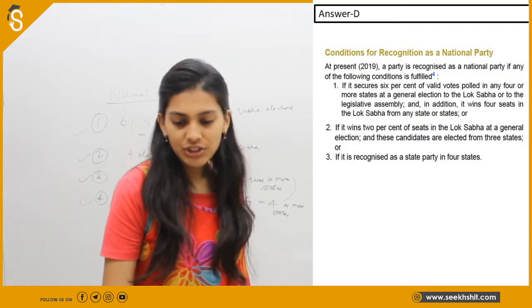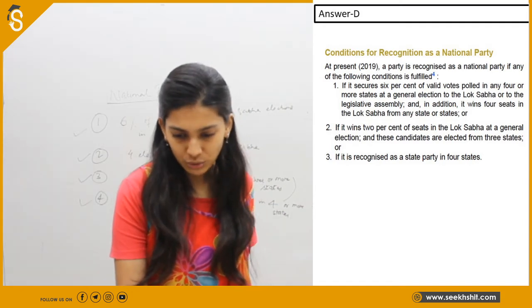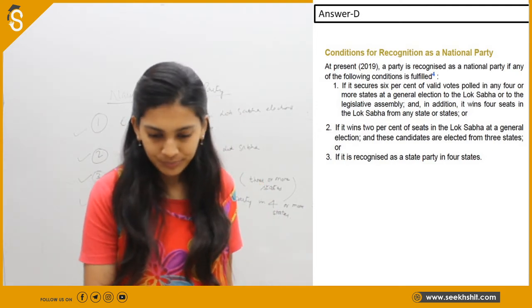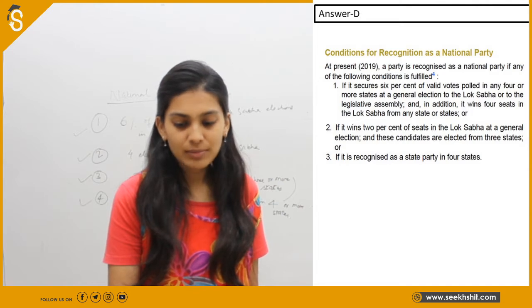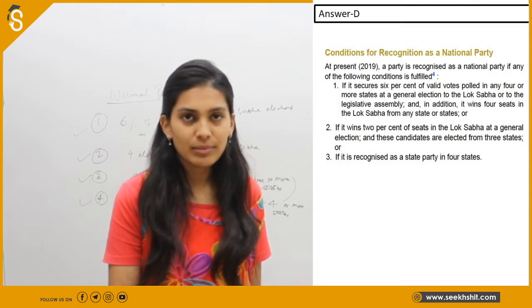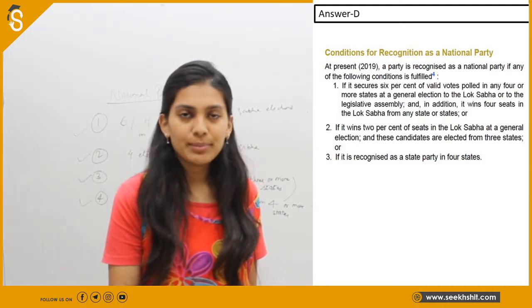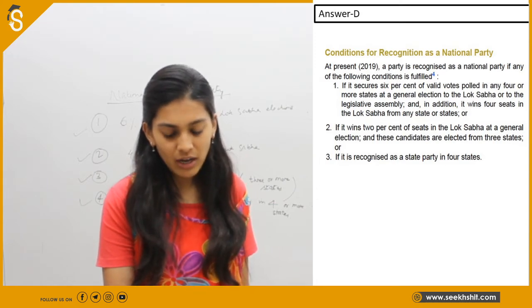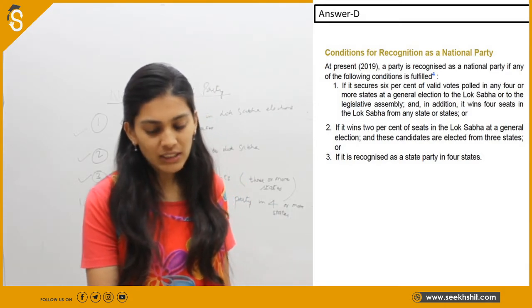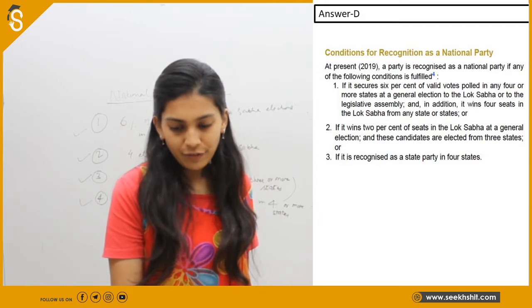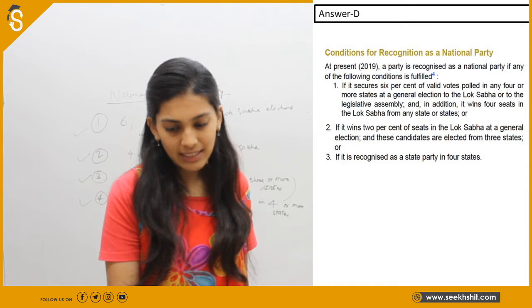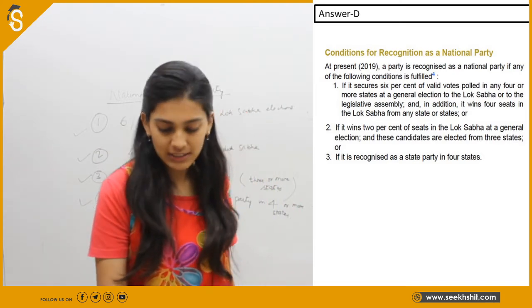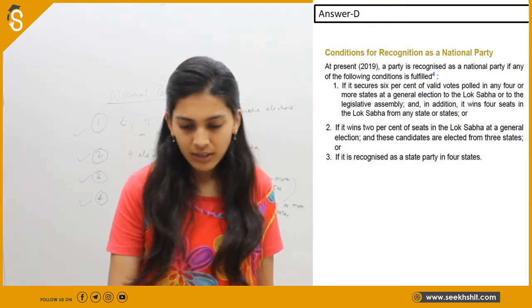The answer is B. As per the current rules, a party is recognized as a national political party if any one of the following conditions is fulfilled: first, it secures 6% of valid votes in 4 or more states and wins 4 seats in the Lok Sabha; second, it wins 2% of seats in the Lok Sabha from at least 3 states; or third, it is recognized as a state party in at least 4 states.